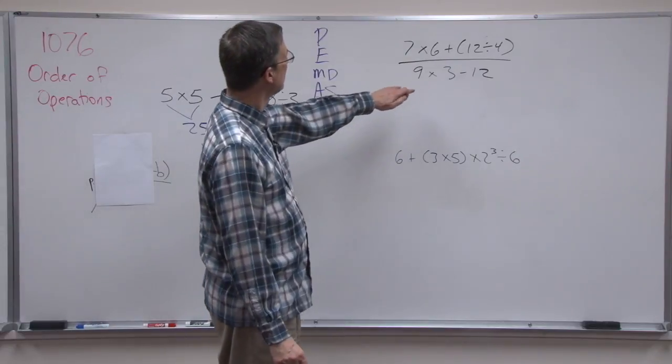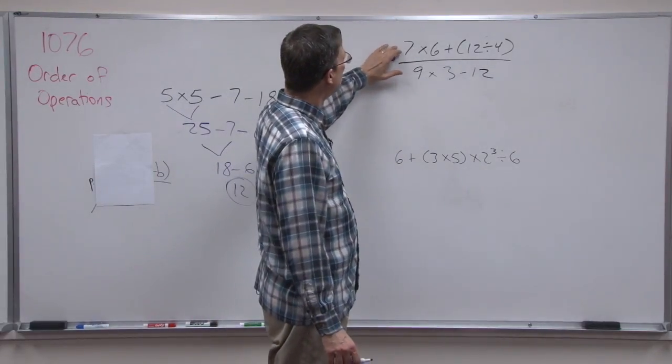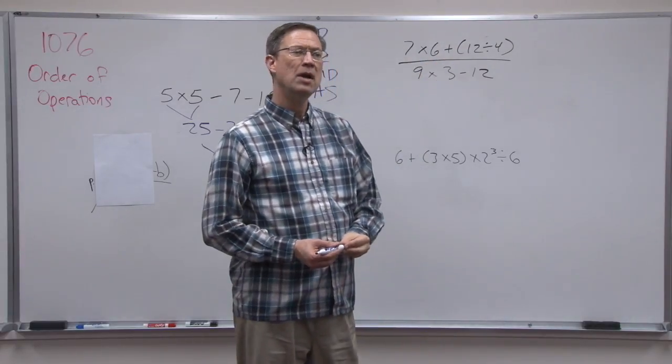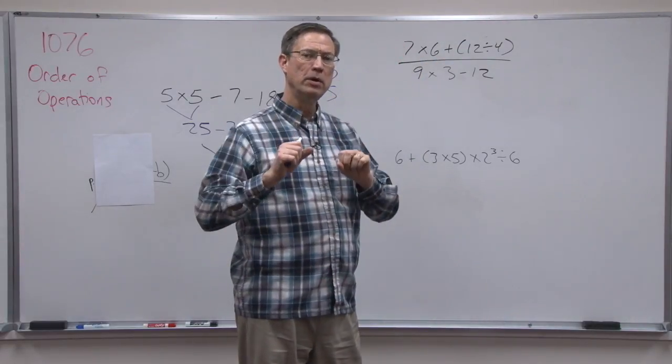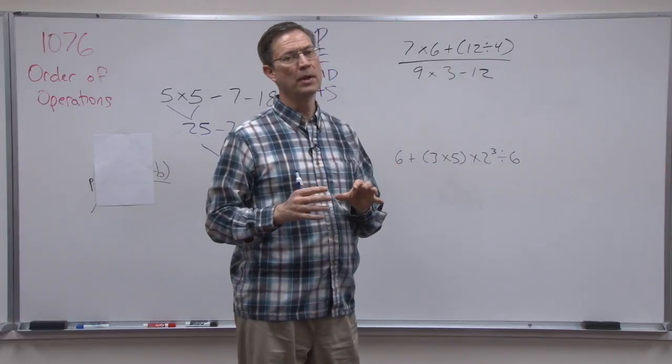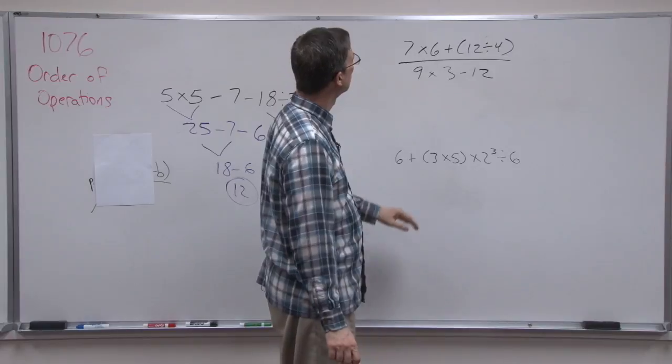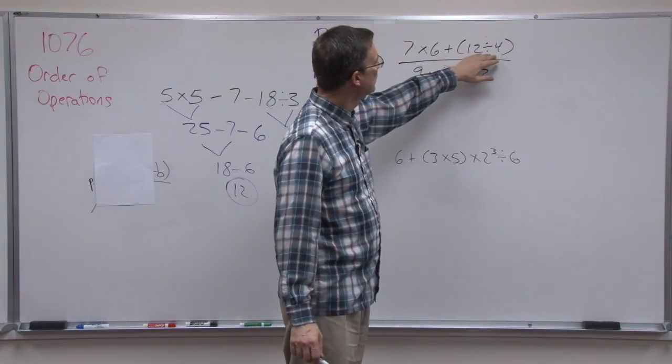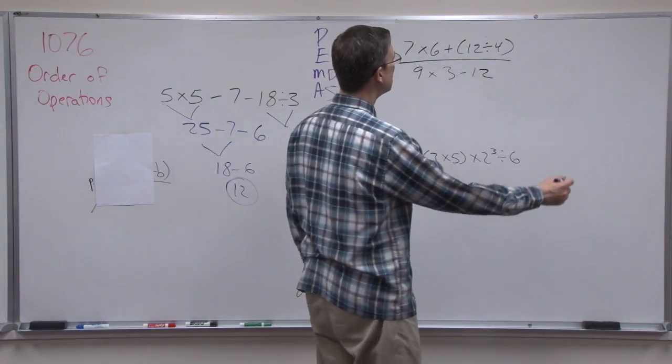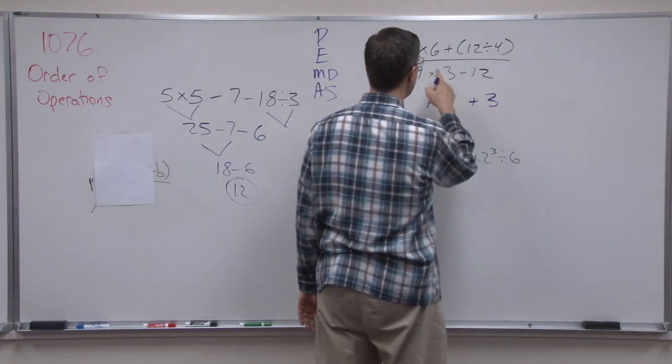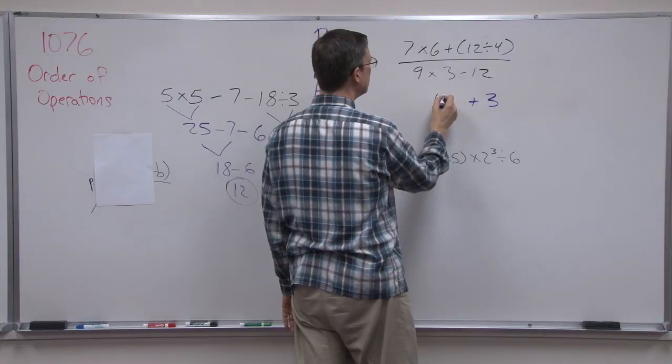Let's look at this one up here. Now when we have a line that separates the numerator from the denominator, we simplify the entire numerator, then do the denominator, and then the last step is reduce the fraction if we need to. So let's do just the top, and we have a parenthesis. So we can solve that and get 3. And then 7 times 6 is 42.